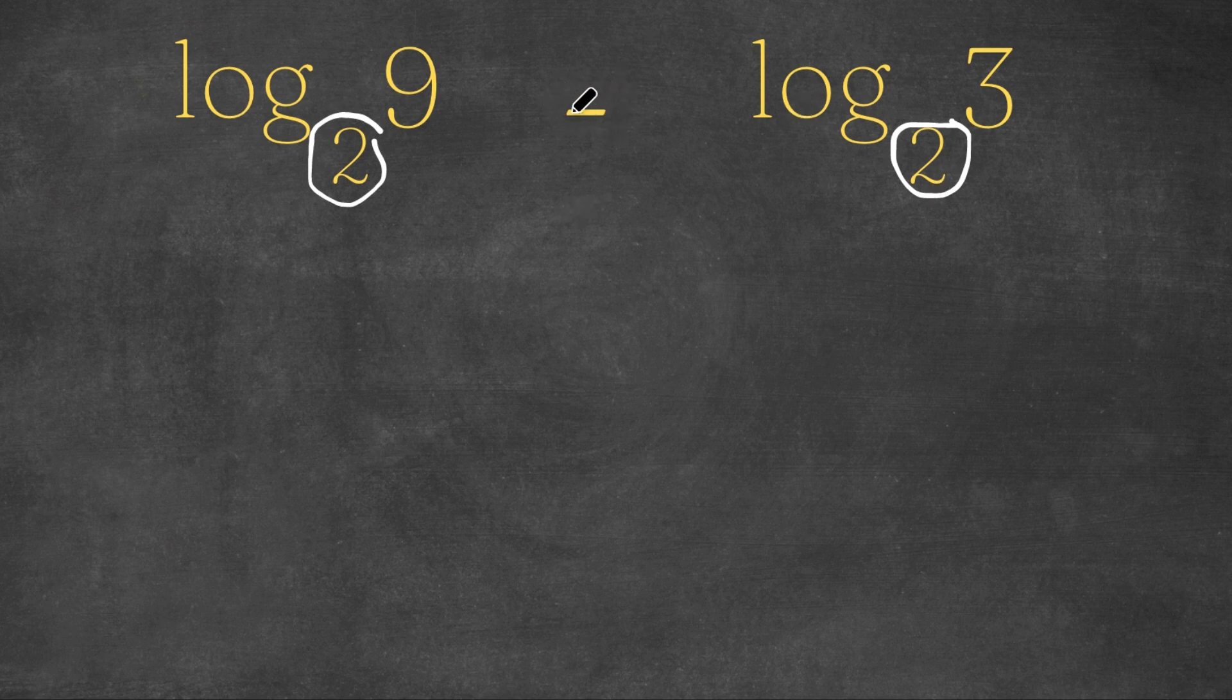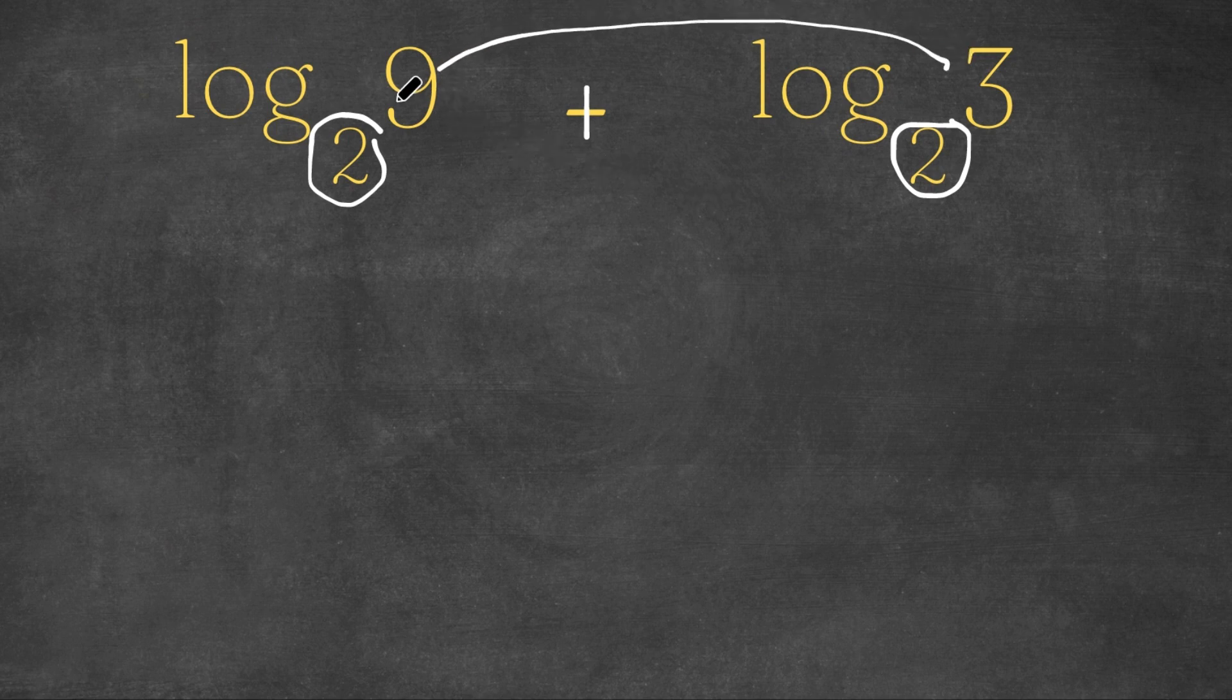Before we try to subtract these, how about we try to add these two instead? When we're adding, remember, we make sure they both have the same bases, and in this case, they do. Then we simply multiply these two numbers. So we're going to multiply the 9 and the 3.